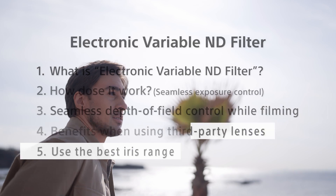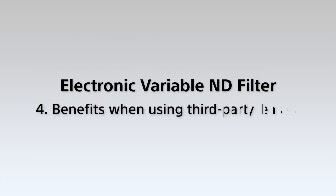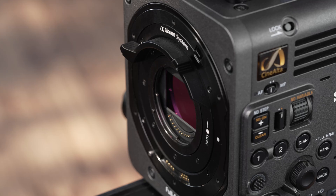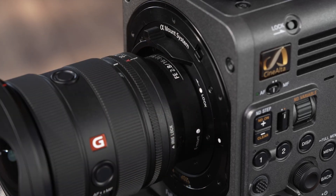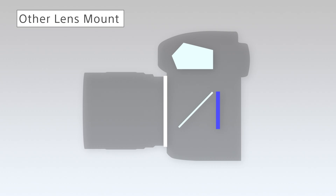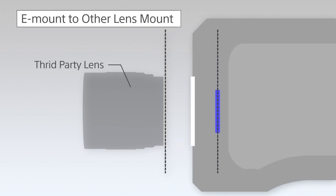This introductory video explains the unique features of Sony's electronic variable ND filter. One of the best features of the E-mount lens system is that the flange back distance is 18 millimeters, which is shorter than that of other lens mounts. Therefore, it is technically possible to use a variety of lens adapters, providing the opportunity to choose from a huge number of third-party lenses from outside the E-mount system.